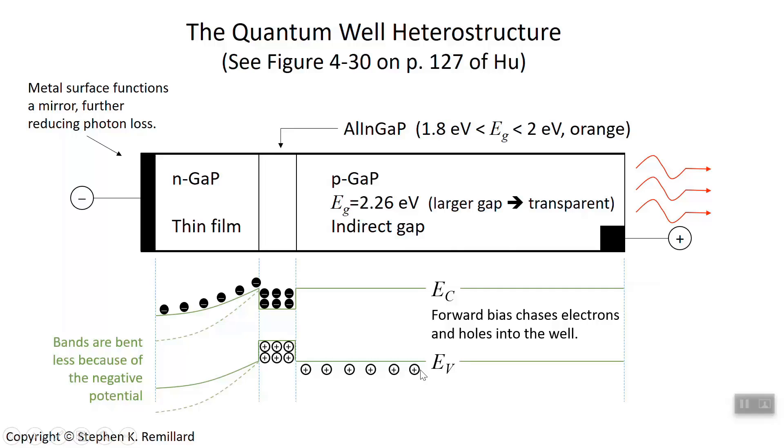Holes do the same thing. They're attracted to the left, to the negative terminal. So they go to the left. But when they get to the well, they fall into it. So these electrons and holes are being detained, and they're being detained for plenty long for them to recombine and make photons. So they do. They make a lot of photons.